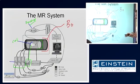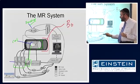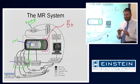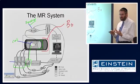So, those are really the key components. The static magnetic field, the RF system, the gradient system, and the receiver.